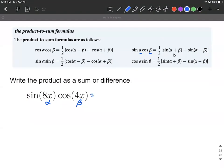So let's jump right in. The formula says this is going to be one half multiplied by a big set of brackets, and then sine of alpha plus beta. In our case, that's going to be 8x plus 4x, plus sine of alpha minus beta, so 8x minus 4x. Close my brackets off.